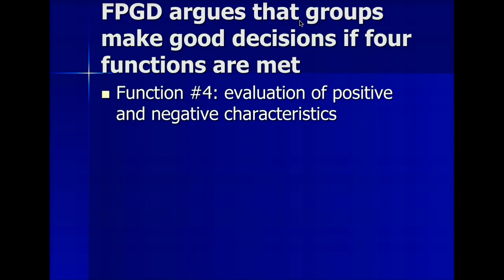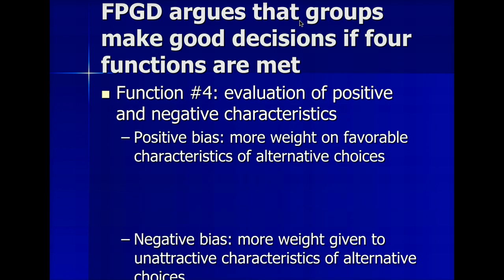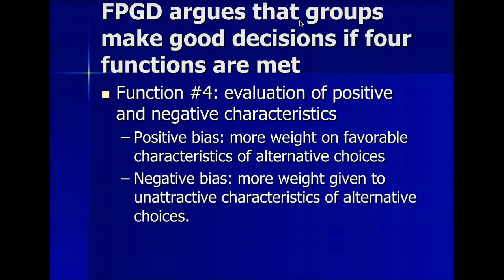Then we have an evaluation of positive and negative characteristics. What we're evaluating here is the solutions against the criteria set up in function number two. You can have a positive bias — giving more weight to favorable characteristics, asking which choices most align with our criteria. Or we can have a negative bias, asking which solutions are most unattractive, the ones that least fit into the goal setting, and do a process of elimination — a last solution standing approach.